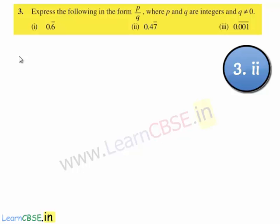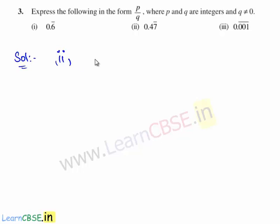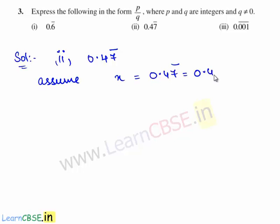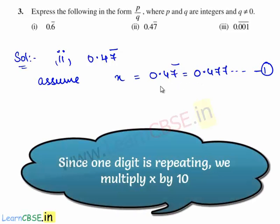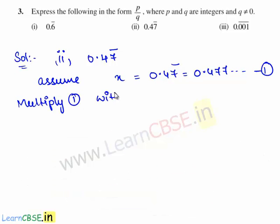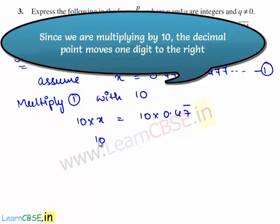Now let us move on to the second bit of the question. The second decimal expansion given is 0.47 bar. We shall assume the given decimal expansion as x, therefore x is equal to 0.47 bar, which is 0.4777 and so on. Consider this as equation 1. Since one digit is repeating in the given expansion, we multiply equation 1 with 10.